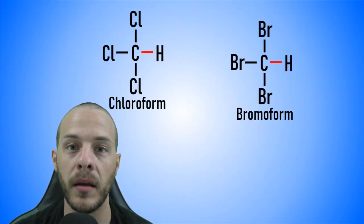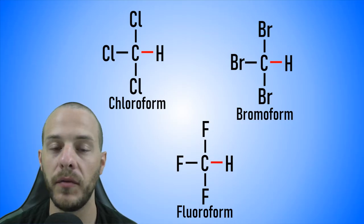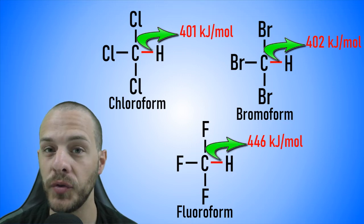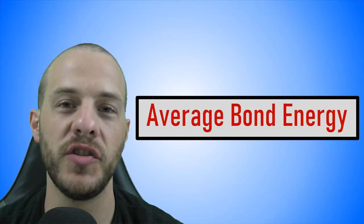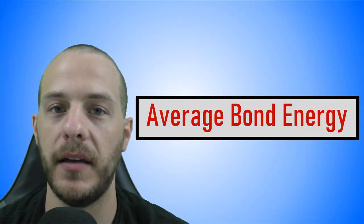It's important to note that the bond energy of a chemical bond between a given pair of atoms differs slightly depending on the molecule in which the atoms reside. For instance, let's take a look at molecules of chloroform, bromoform, and fluoroform. All three of these molecules have a carbon-hydrogen bond, but the bond energies of the carbon-hydrogen bond in chloroform, bromoform, and fluoroform are 401, 402, and 446 kilojoules per mole respectively. Because of this variability, chemists have found it useful to calculate the average bond energy for a bunch of chemical bonds, obtained by averaging together the individual bond energies across a wide variety of compounds.